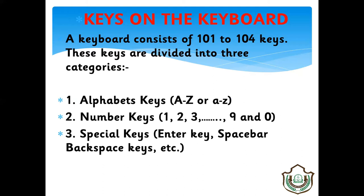Alphabet keys — jo letters hote hain, jo A to Z hote hain, unko alphabet keys bolte hain. Ye 26 hote hain. Second — number keys. Number keys mein 1, 2, 3, 4, 5 — ye aapke number keys hote hain, aur ye 10 hote hain (1 to 9 plus 0). Third is special keys — jaise Enter key, Space Bar, Backspace key, aur Caps Lock key — ye humare special keys hote hain.